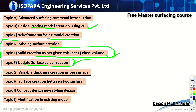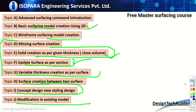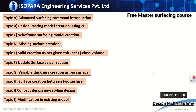You also get to learn about updating surfaces as per section — since in automotive or other domains we get different sections, different thicknesses, and different levels. Additional topics include variable thickness creation as per the surface, surface creation between surfaces, concept design or new styling design which is the most important part of surface work, and modification in existing models — whether dumb or parametric — as per client or your own requirements.